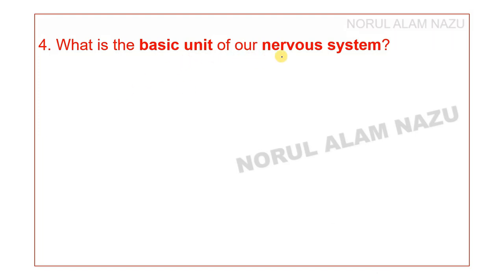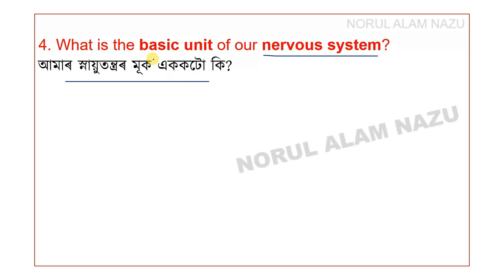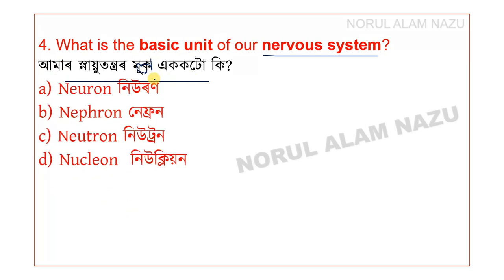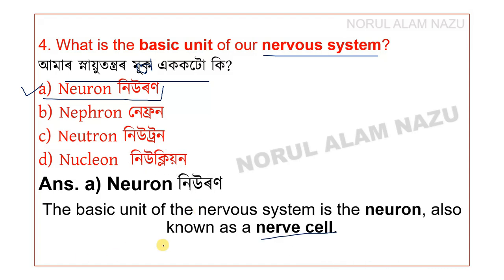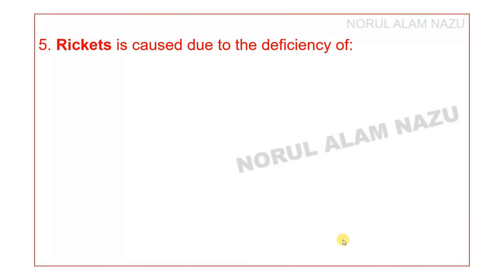What is the basic unit of our nervous system? The basic unit of the nervous system is the neuron, and it is also known as the nerve cell.